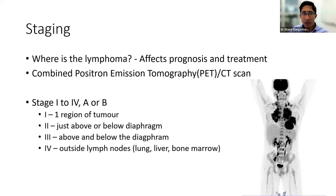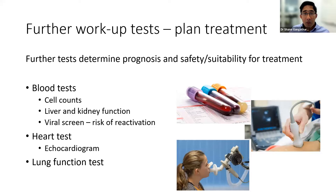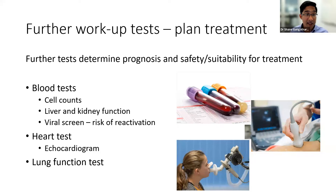We've got a diagnosis and a stage — before discussing treatment, there are further tests needed to make sure treatment will be safe and to clarify prognosis. We do standard blood counts checking haemoglobin — anaemia can indicate high-risk disease. We screen liver and kidney function since some treatments can affect these organs. We screen for viruses routinely so occult hepatitis isn't reactivated during chemotherapy. Some drugs can affect the heart, so we get a baseline echocardiogram.